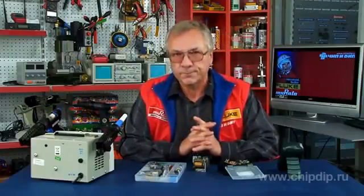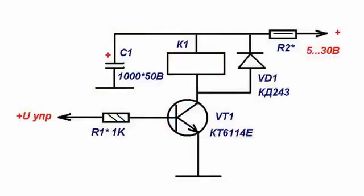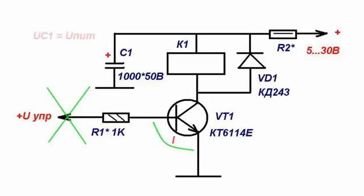Let's have a look at the standard relay connection circuit, often used in energy-efficient electronic devices. When the current passes through the junction, the base-emitter of the transistor is missing. The transistor is closed, and no voltage is fed to the relay coil. The capacitor voltage is equal to the supply voltage.